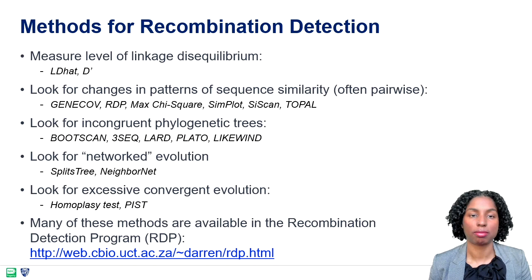We can detect recombinants or reassortants via incongruences in phylogenies, but this can be a long and tedious process, where it is necessary to build and compare phylogenetic topologies for multiple genes or genome regions.